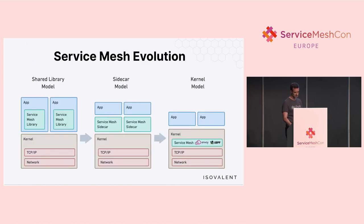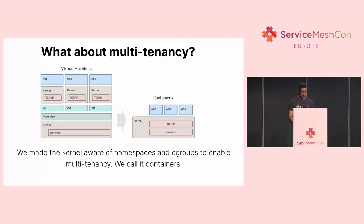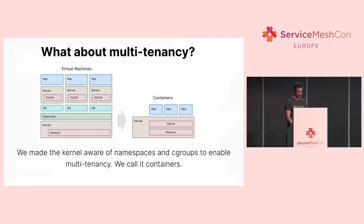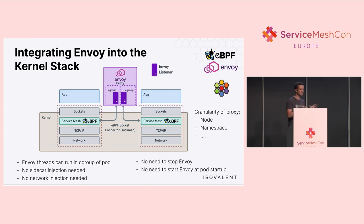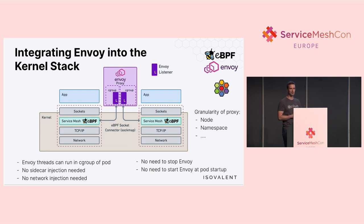Cilium, Hubble, and Tetragon already support this. What we want to achieve is an evolution: from functionality built into the app, to sidecar, to built into the kernel — similar to the transition from virtual machines to containers, where we made the Linux kernel multi-tenant aware. We're applying those same principles, bringing multi-tenancy controls into Envoy and the kernel. Technically, we will integrate Envoy as part of the kernel stack, running Envoy listeners per thread in a separate cgroup of the pod, so CPU accounting is still attributed to the pod's quota. This gives us no sidecars, no network injection, and no need to start or stop Envoy on pod startup.